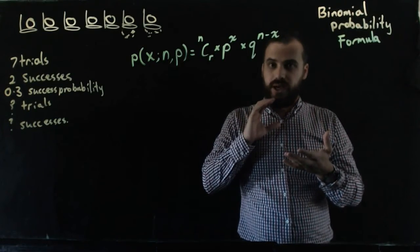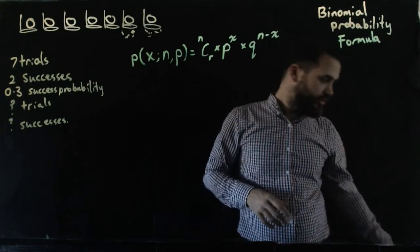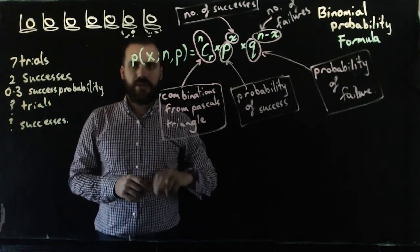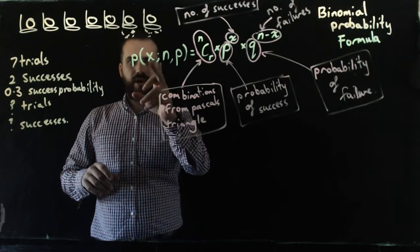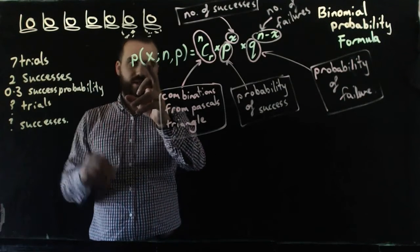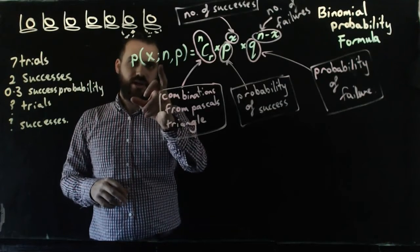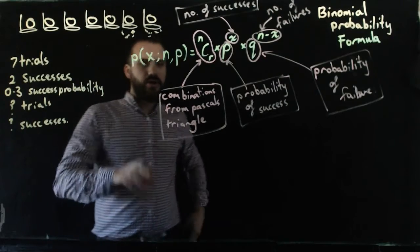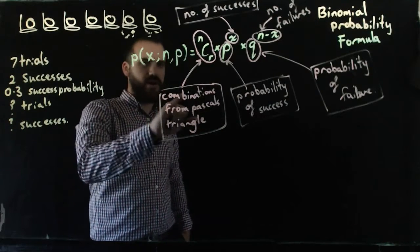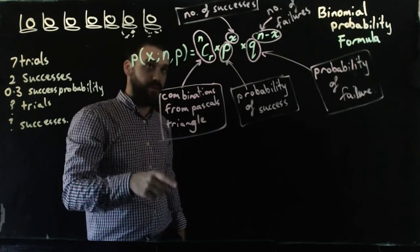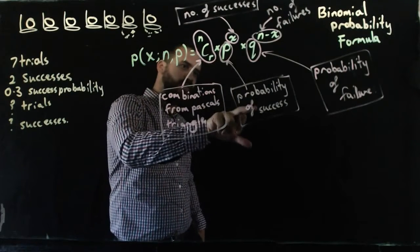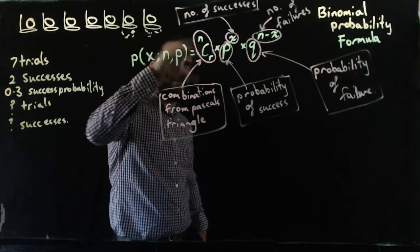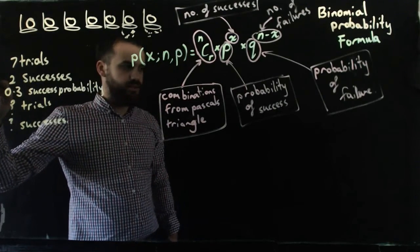So I'm going to annotate this, and then you guys can take some notes. Make sure you take some notes here, but I'm just going to run through it one more time. The probability of x successes, 2 successes, from 7 trials—that's n for trials—if the probability of success is 0.3, is equal to combinations from Pascal's triangle. You figure out how many different ways that can happen, multiplied by the probability of success to the power of the number of successes you would like to have, in this case, two successes.